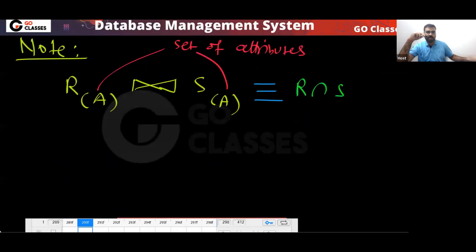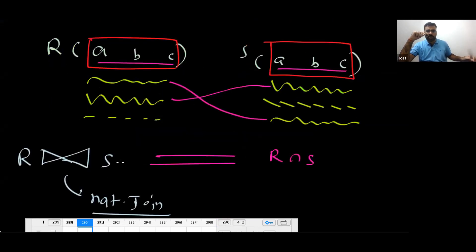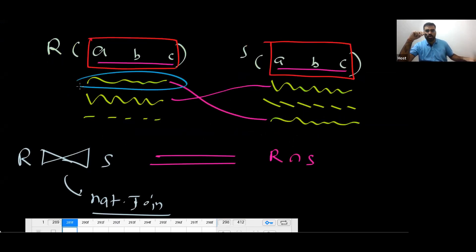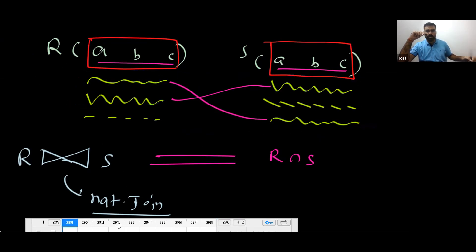This is a simple and important result. If you have the same set of attributes in two relations, the complete row must match — so natural join becomes equivalent to intersection. This row should match with this row, and the complete row should be matched.